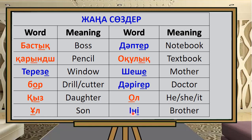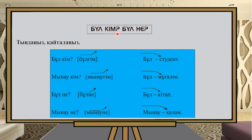Inna means 'brother' — specifically it is used for 'little brother.' And Agha is used for 'bigger brother.'